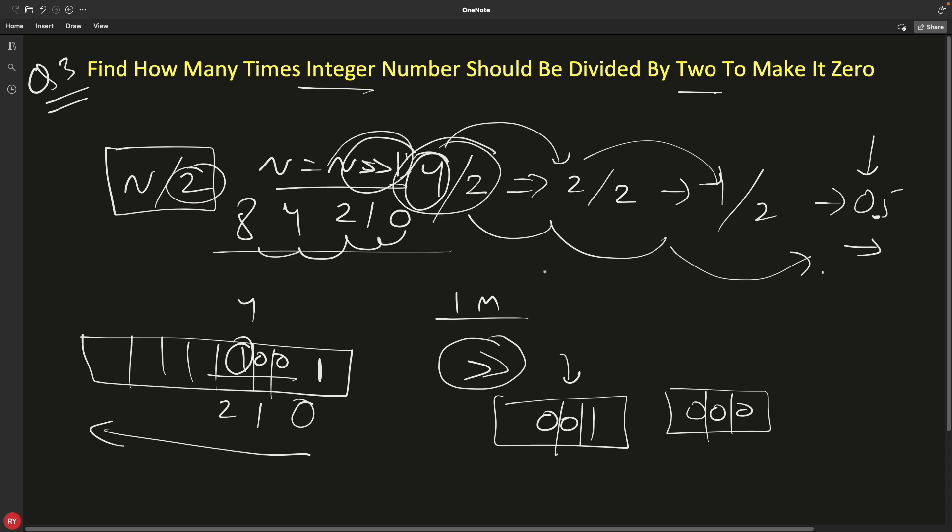There is another way also. If you have some number like log n and then you divide that with log 2, this would also result in how many times you should divide by two to reach zero. So this is also one of the ways.